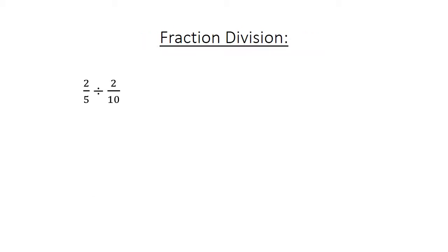Fraction division: 2 over 5 divided by 2 over 10. Flip the second fraction and multiply: 2 over 5 times 10 over 2 equals 20 over 10, which equals 2.